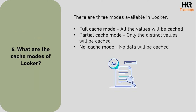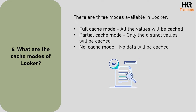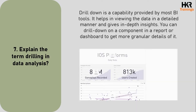The sixth question: what are the cache modes of Looker? There are three modes available in Looker — full cache mode, partial cache mode, and no cache mode. In the full cache mode, all the values will be cached. In the partial cache mode, only the distinct values will be cached. And in the no cache mode, no data will be cached.